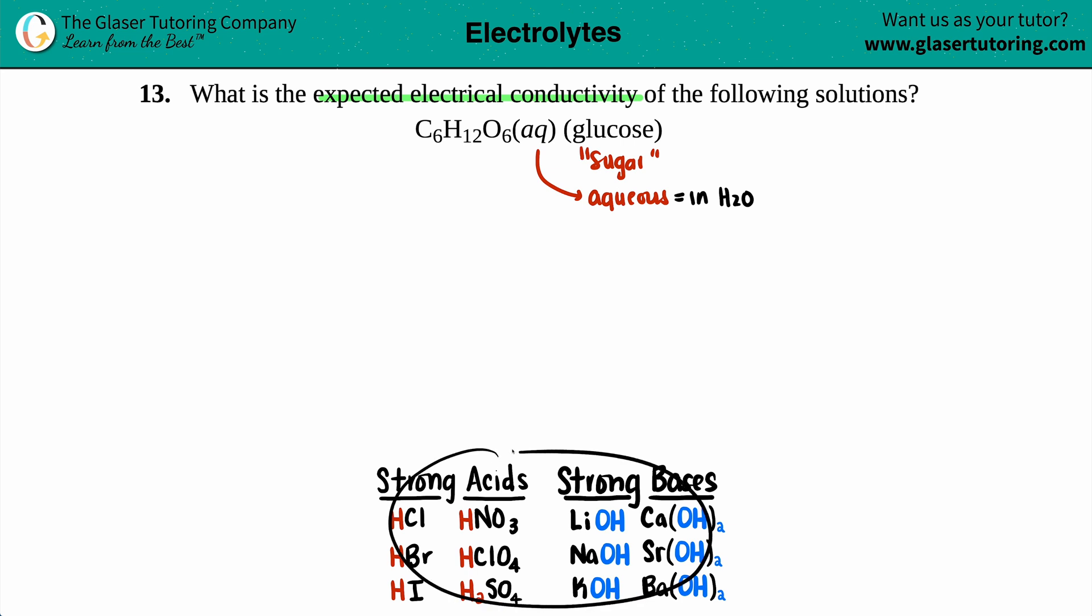But C6H12O6, glucose, it doesn't make the cut. Glucose is the primary energy source for us in our body. So it wouldn't be classified as a strong acid or a strong base.